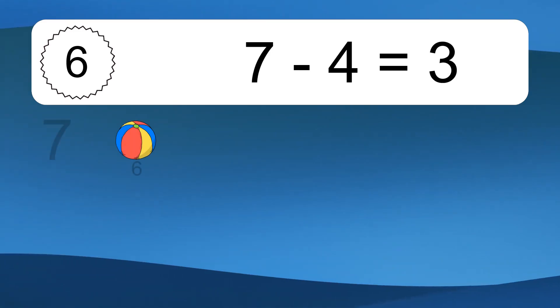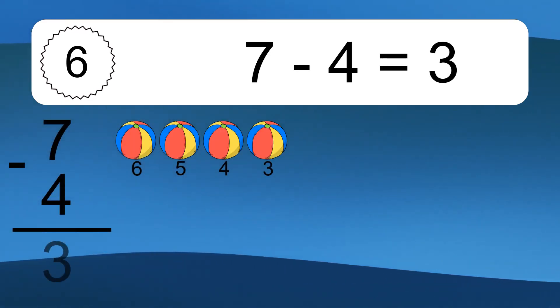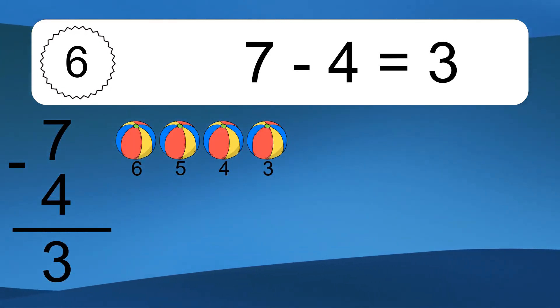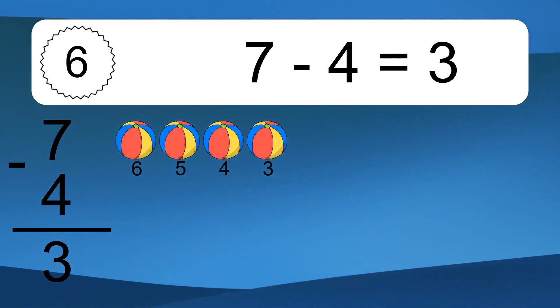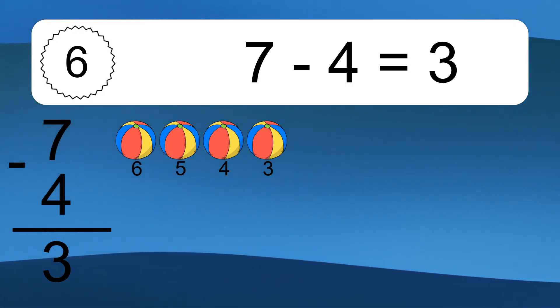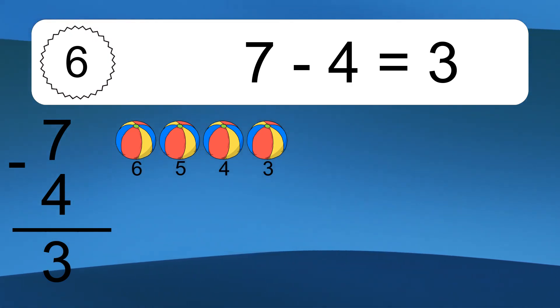7 minus 4 equals what? 7 minus 4 equals 3. Let's count it: 6, 5, 4, 3.